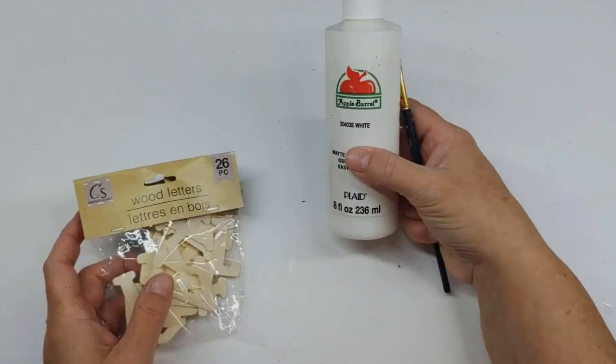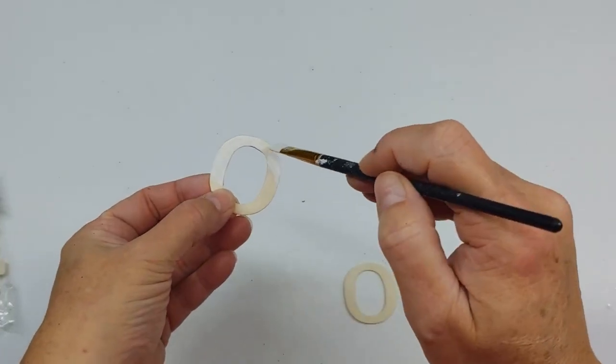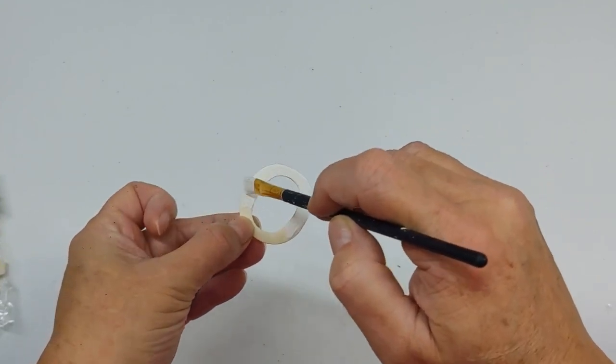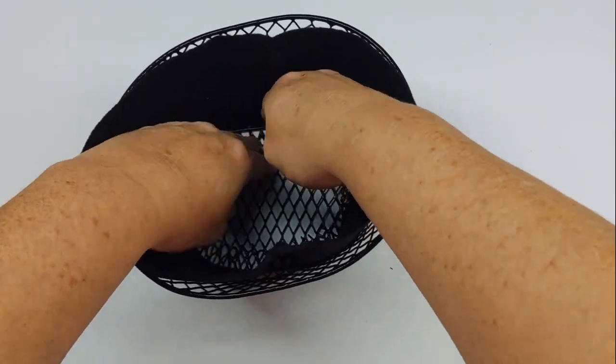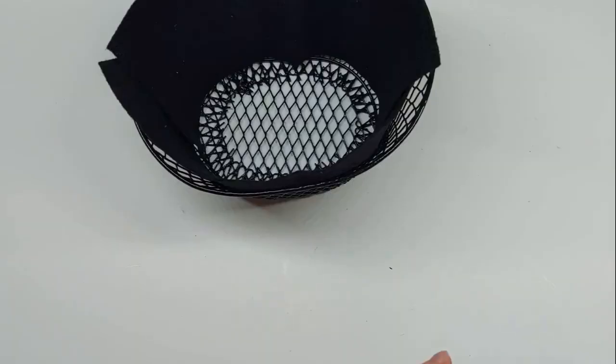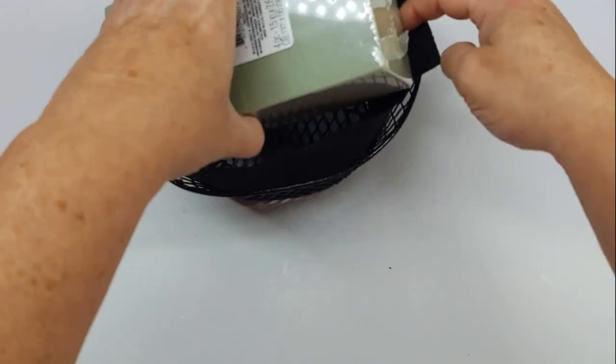On this next one, I took wood letters from the Dollar Tree and white apple barrel paint that I already had and painted the letters to spell BOO. I picked up a basket from Dollar Tree and lined it with felt, and then I placed floral foam inside.